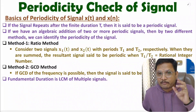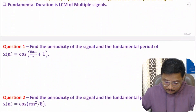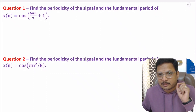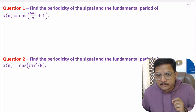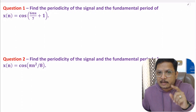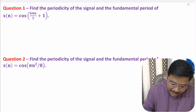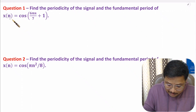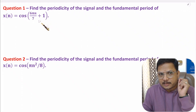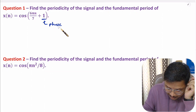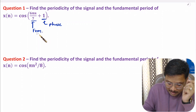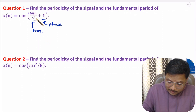Now let us solve the first question, which is based on a discrete signal. In a discrete signal, the fundamental duration will be in the form of samples. Here we have x(n), a discrete signal given by cos(6πn/7 + 1). Here the value 1 is the phase, and 6πn/7 represents the frequency term. Based on this frequency term, we can identify the fundamental period.